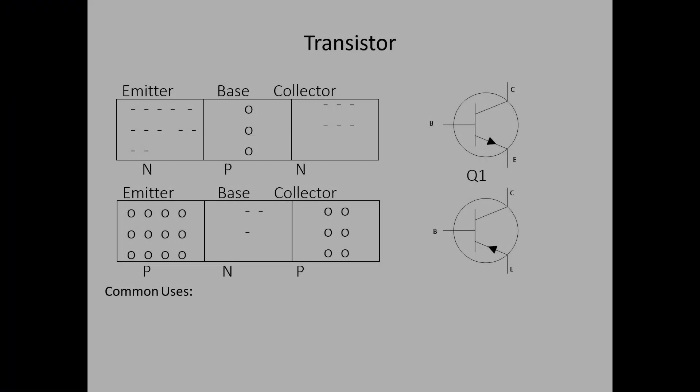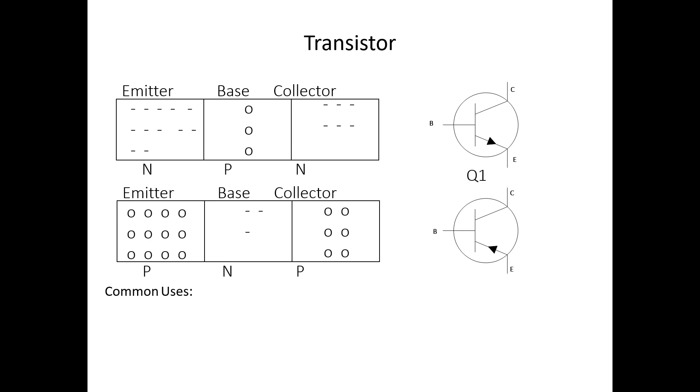Okay so the first thing we're going to go over today is the transistor. The purpose of a transistor is that it's a three terminal 2pn junction semiconductor device used to control current in a circuit. There are two types of transistors, the NPN transistor and the PNP transistor.